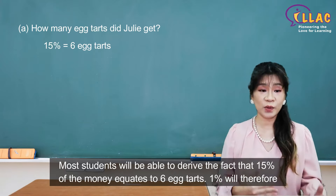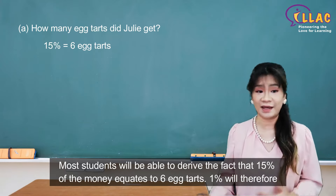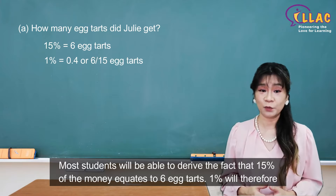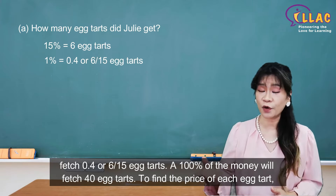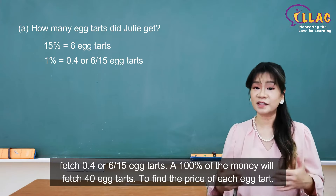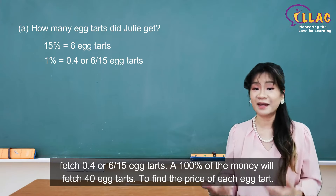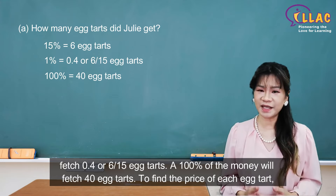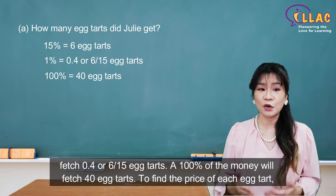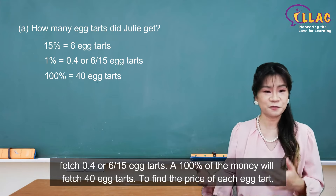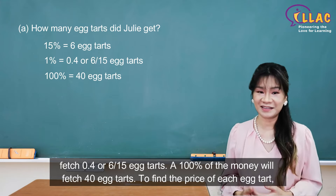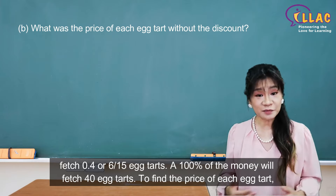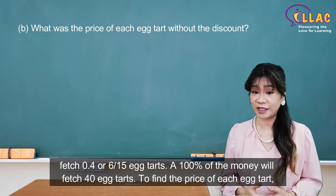Most students will be able to derive the fact that 15% of the money equates to 6 egg tarts. 1% will therefore fetch 0.4, or 6 over 15, egg tarts. 100% of the money will fetch 40 egg tarts.